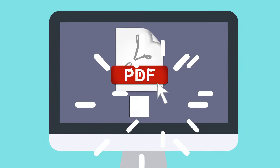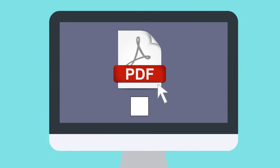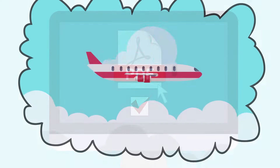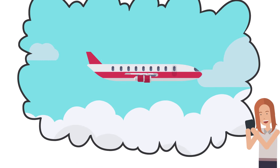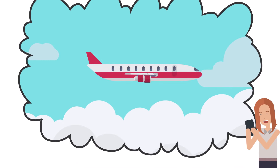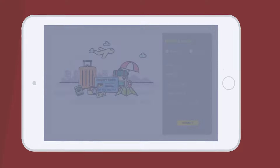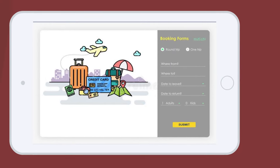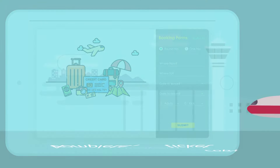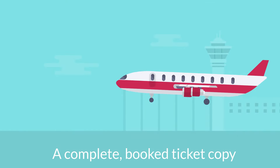Download the airline ticket from the company you have booked your flight with in the form of a PDF file. Select it from your computer and upload it into the application. Remember that the flight booking confirmation must include the arrival and departure dates as well as the name and surname of the passenger.